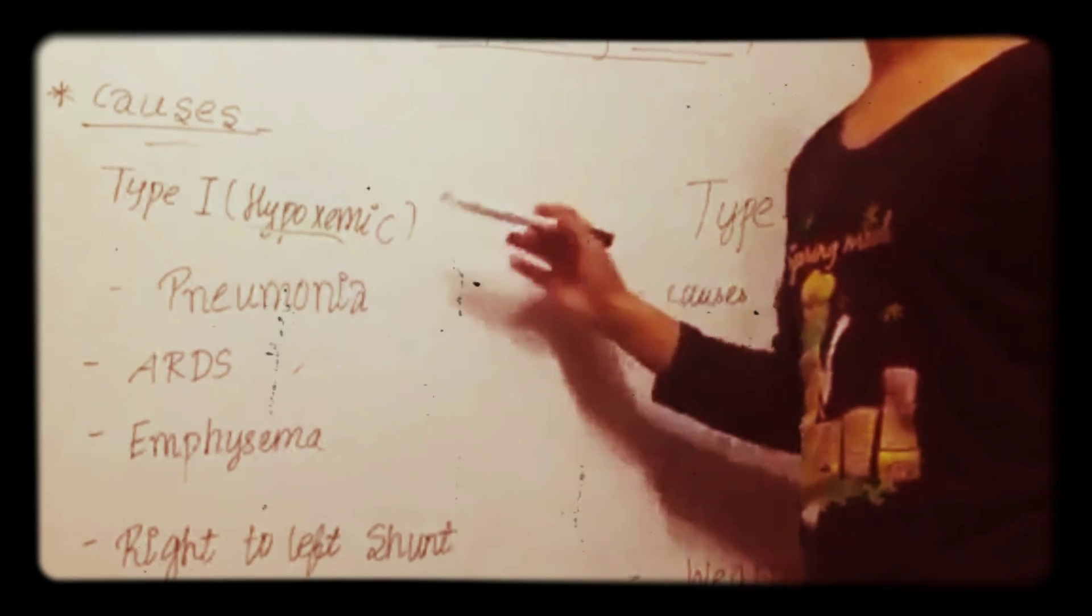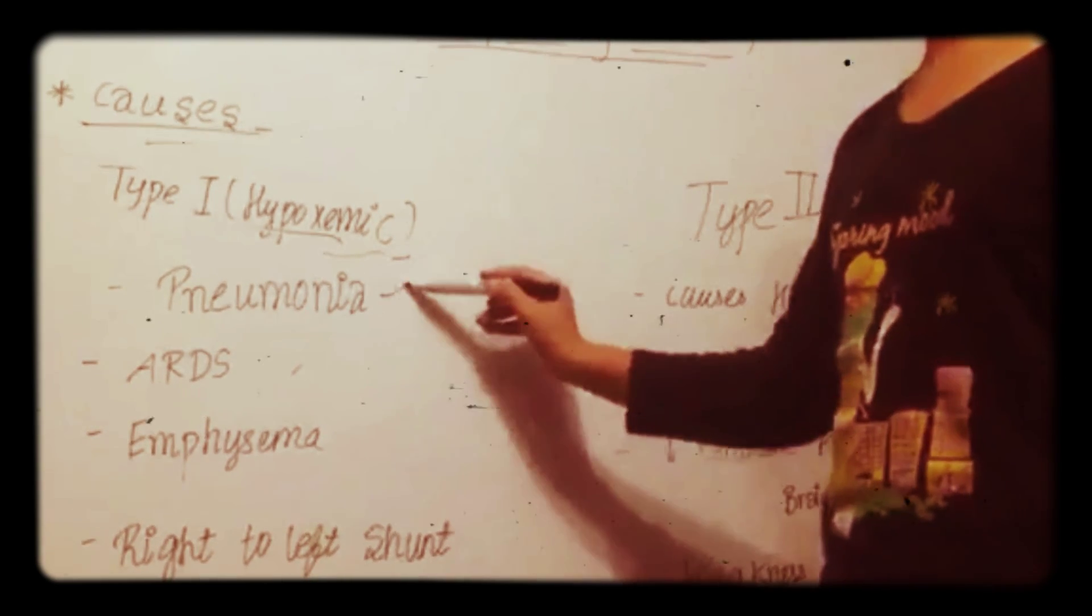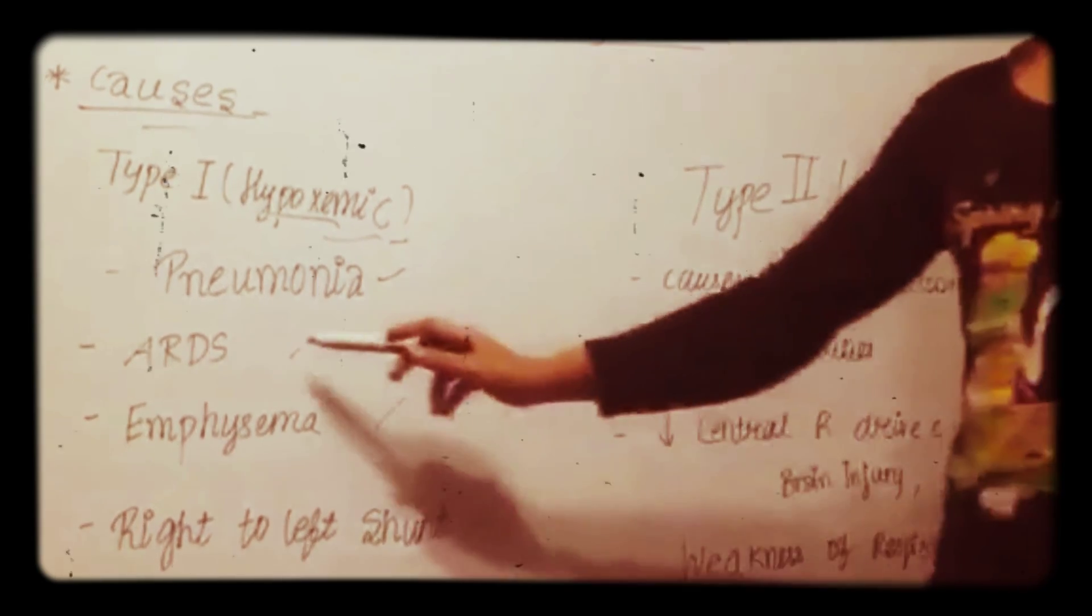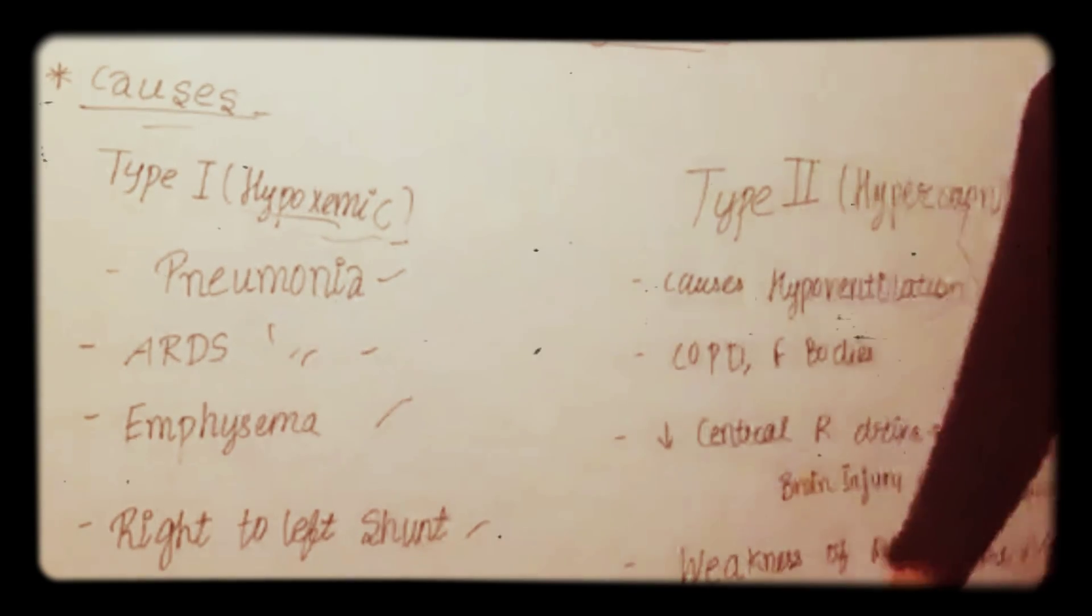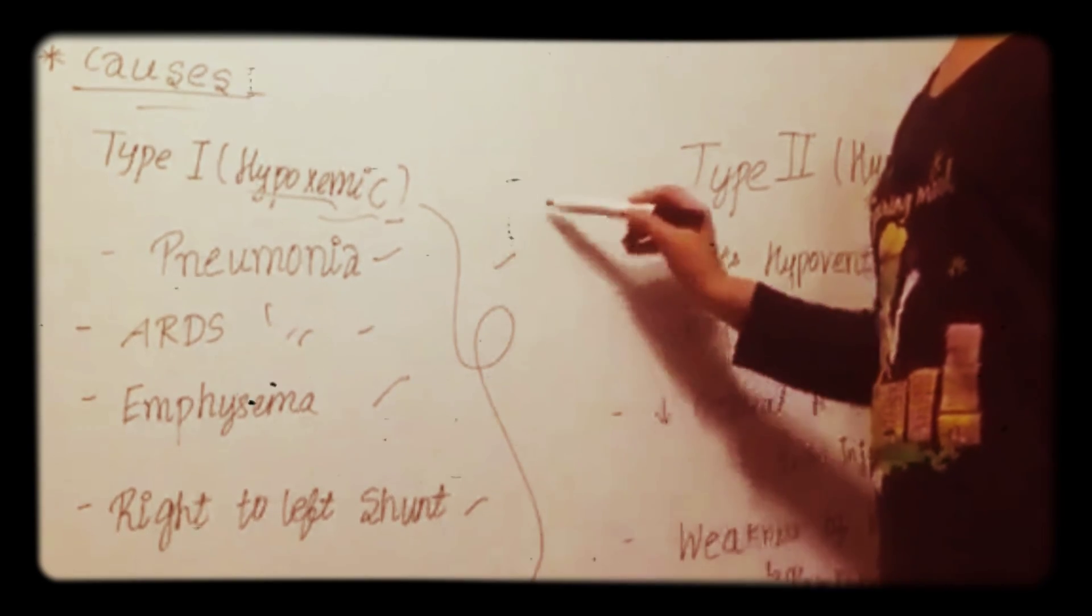Causes of respiratory failure: Type 1 causes, hypoxemic respiratory failure causes are pneumonia, ARDS, emphysema, and right to left shunt. ARDS is acute respiratory distress syndrome, this is already asked in many exams.